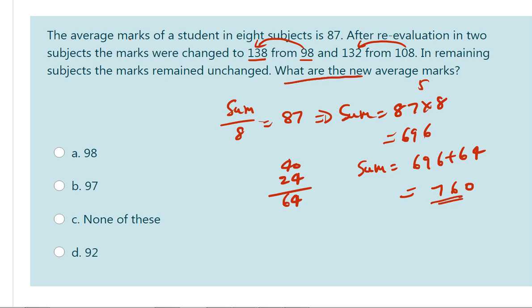What are the new average marks? New sum is 760 divided by 8 subjects. So 8 9s are 72, 8 5s are 40. 95 is the answer.